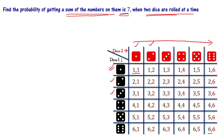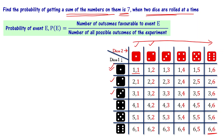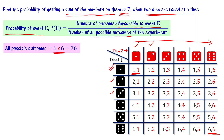So the possible outcomes range from (1,1) to (6,6). The probability definition: probability of event E is defined as the number of outcomes favorable to event E divided by the number of all possible outcomes. All possible outcomes are (1,1) through (6,6), which is 6 × 6 = 36. So the denominator is 36.